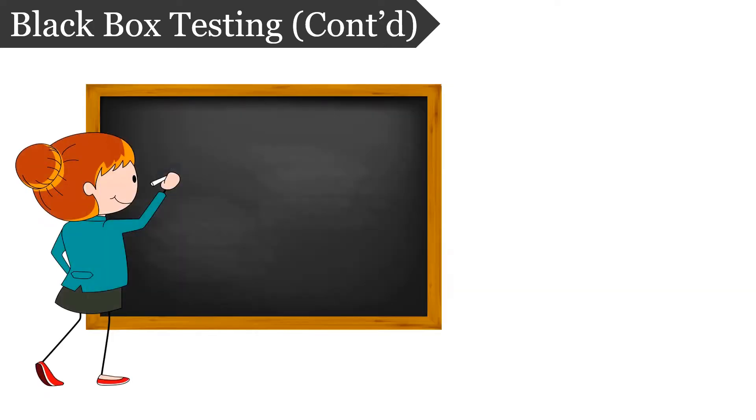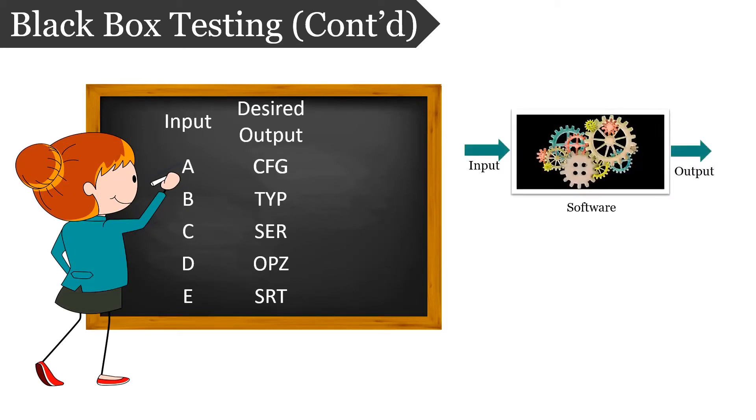Now let us discuss how black box testing is performed. Initially the tester has to identify all possible input values along with their desired output. Now the tester has to test each input value and collect the generated output.